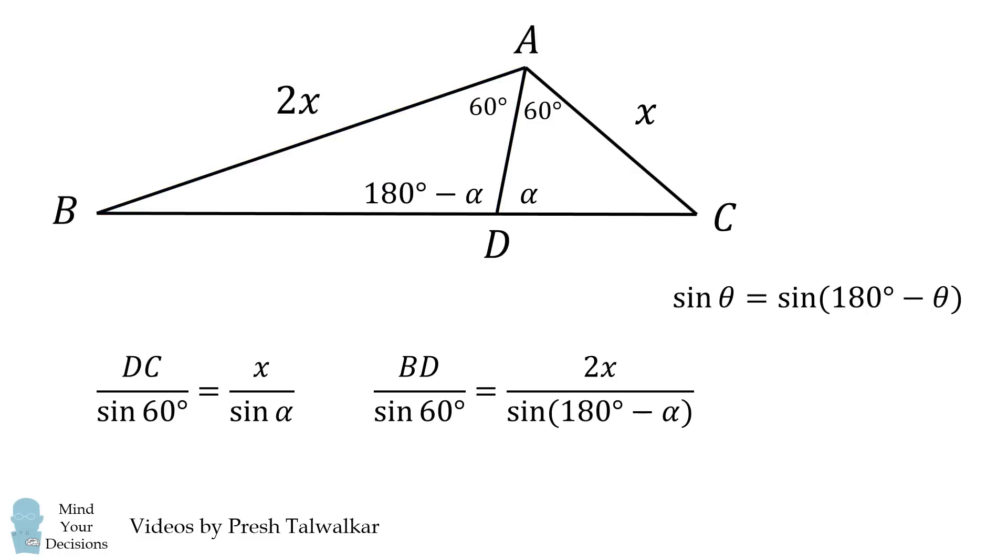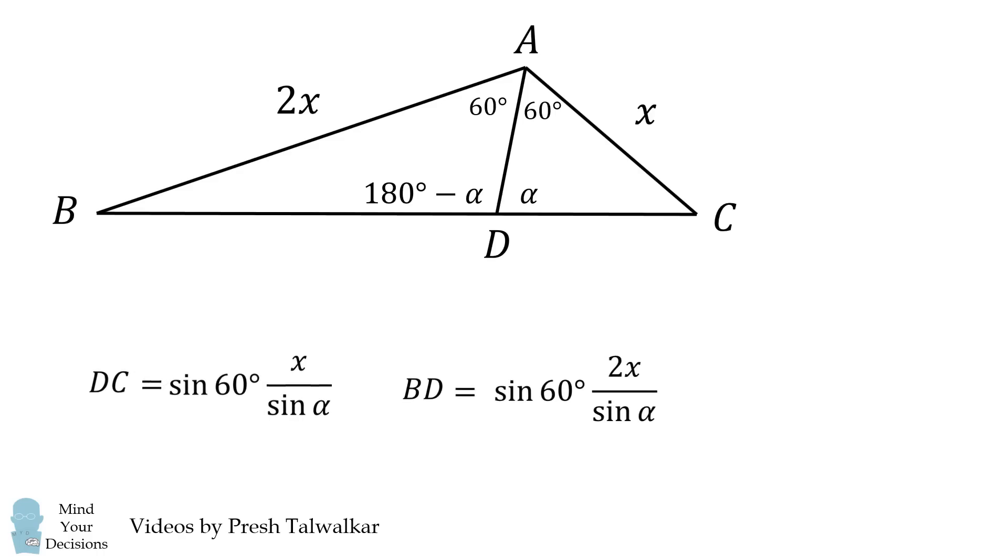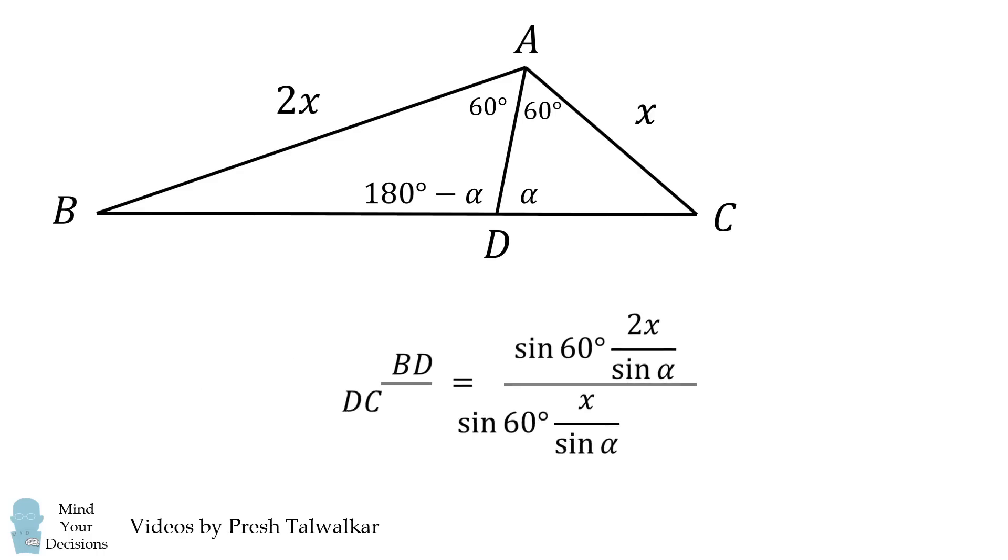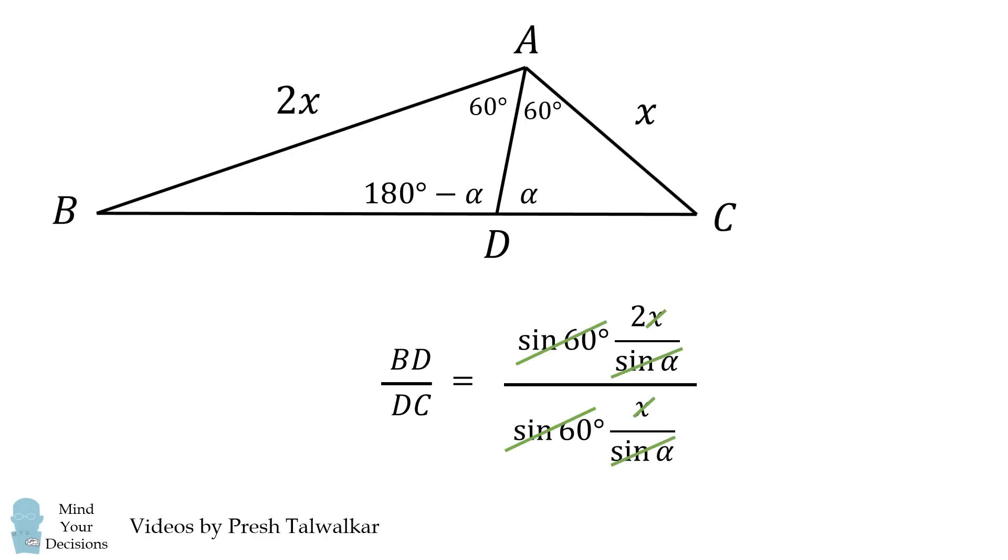Next, we use the identity that the sine of an angle is the same as its supplementary angle. So we can simplify this fraction. Now, let's multiply both equations by the sine of 60 degrees, and then we'll divide the first equation from the second equation. We get the ratio BD to DC. We can now cancel out many terms. We're left with just the fraction equal to 2. And this will directly lead to the identity that we want. BD is equal to 2 times DC.